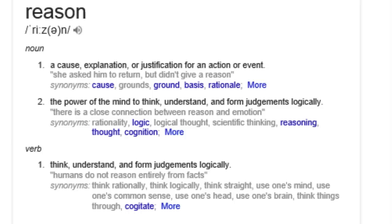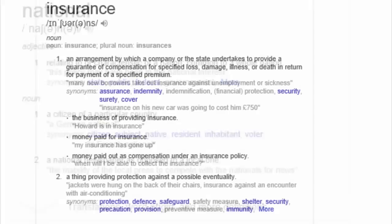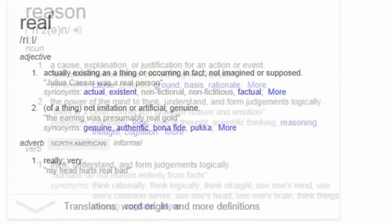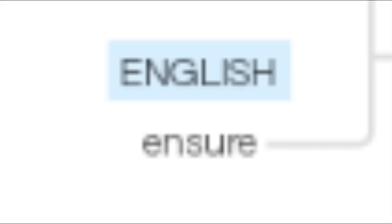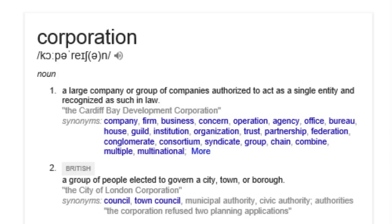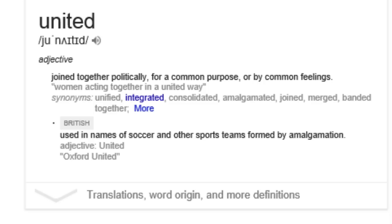The reason we have a national insurance number is not for tax purposes. The real reason we have a national insurance number is because we — the persons, the people — we are the corporation's assurance. We are being used to insure for the corporation of the United Kingdom.